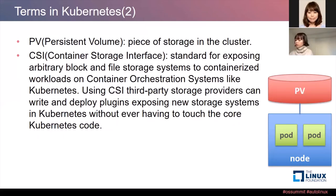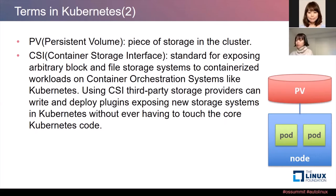I would also like to introduce some terms in Kubernetes related to storage volume. First, Persistent Volume — a Persistent Volume is a piece of storage in the cluster. Next, Container Storage Interface, called CSI, is a standard for exposing arbitrary block and file storage systems to containerized workloads on container orchestration systems like Kubernetes. Using CSI, third-party storage providers can write and deploy plugins exposing new storage systems in Kubernetes without ever having to touch the core Kubernetes code.